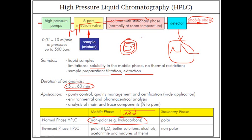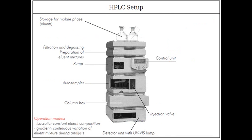We use pressure in HPLC because in gas chromatography, pressure is not needed — gas can flow randomly from one place to another. But liquid cannot flow on its own; you need to push it to transfer from one place to another. That is why pressure is required for liquid flow in HPLC.